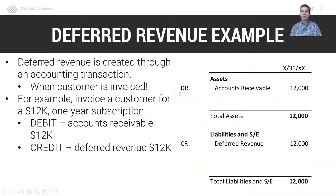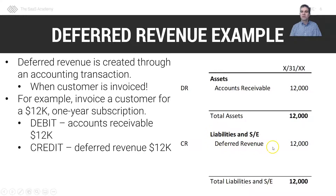A quick example with deferred revenue: deferred revenue is created through an accounting transaction when a customer is invoiced. Let's say we invoiced a customer for a one-year subscription for $12,000. The accounting transaction is we debit accounts receivable for $12,000 because they owe us $12,000, and then we record a liability of $12,000 for deferred revenue.